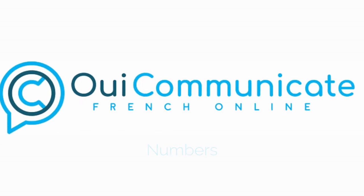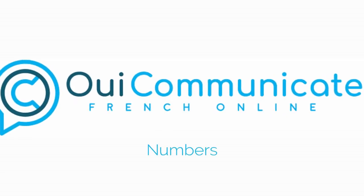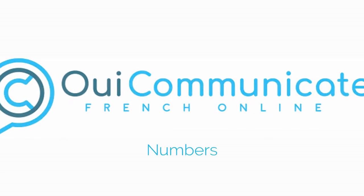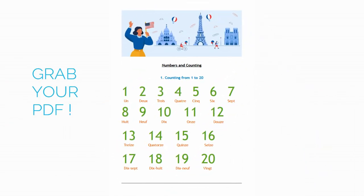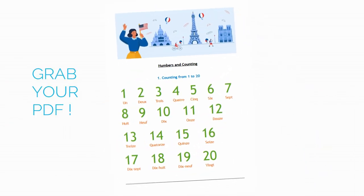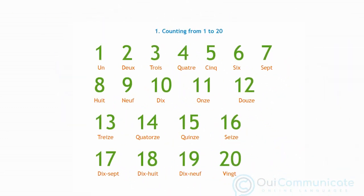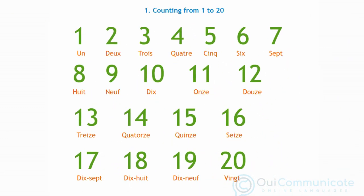Hello, welcome to the video on numbers in French, in which we'll learn all about counting from the easiest numbers up until the billions. Let's start. The first thing we'll look at are numbers from 1 to 20, which we'll read through twice. Let's go.